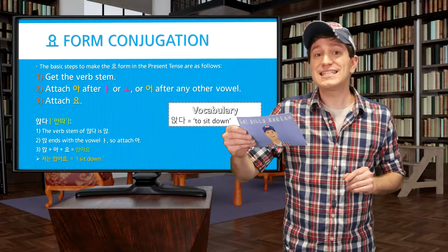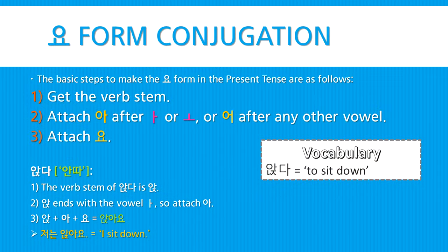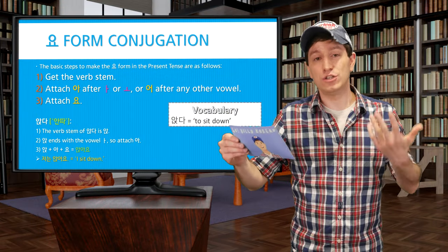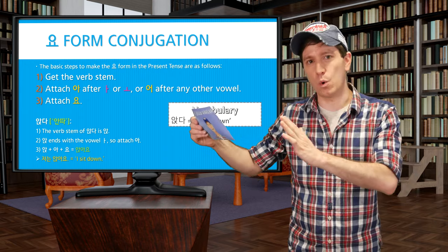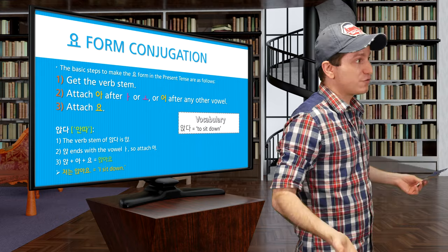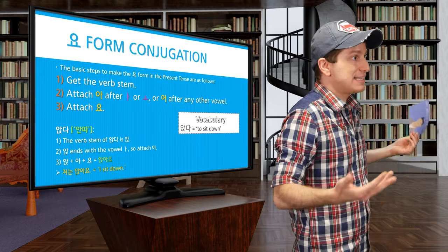For example, let's take the verb 앉다 (to sit down). The verb stem is 앉. It has the vowel 아, so we're going to attach 아, and we get 앉아. Finally we attach 요: 앉아요. So you can make the sentence 저는 앉아요 — I sit down.